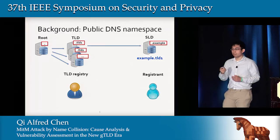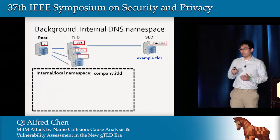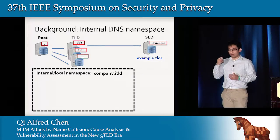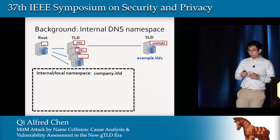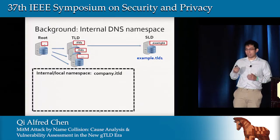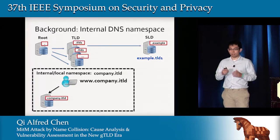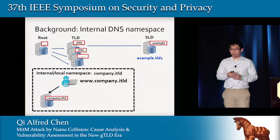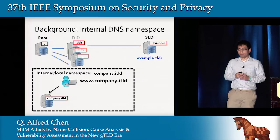Alongside the public DNS namespace, we also have internal DNS namespaces, which are typically set up in local networks — for example, in many companies — by setting up their own DNS servers. This internal namespace is intended to be private and should not be visible outside of the internal network.